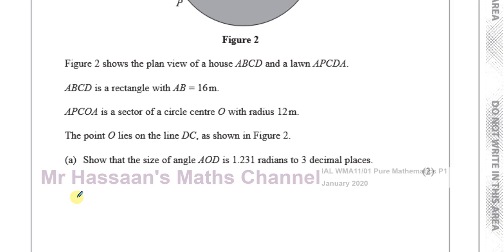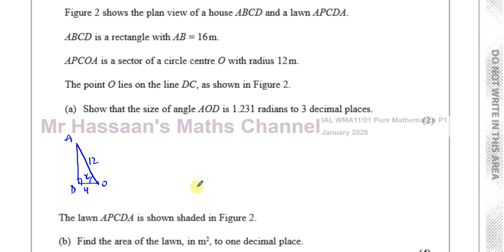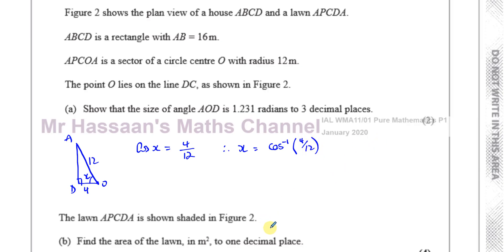We have a right angle triangle with vertices A, O, and D. We know OD is 4 and OA is 12, and we need to find angle X. So cosine of X equals the adjacent over the hypotenuse, therefore angle X equals inverse cosine of 4 over 12.